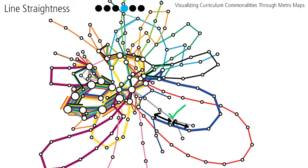Line straightness. Line segments that are a part of the same subway line should be as close to being in a straight line with each other as possible.